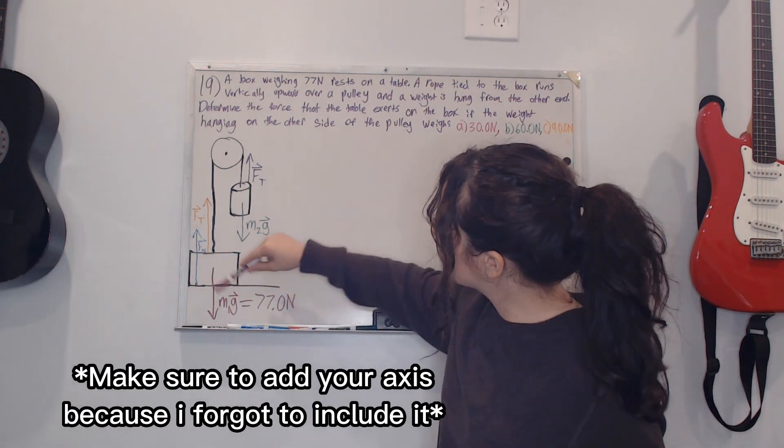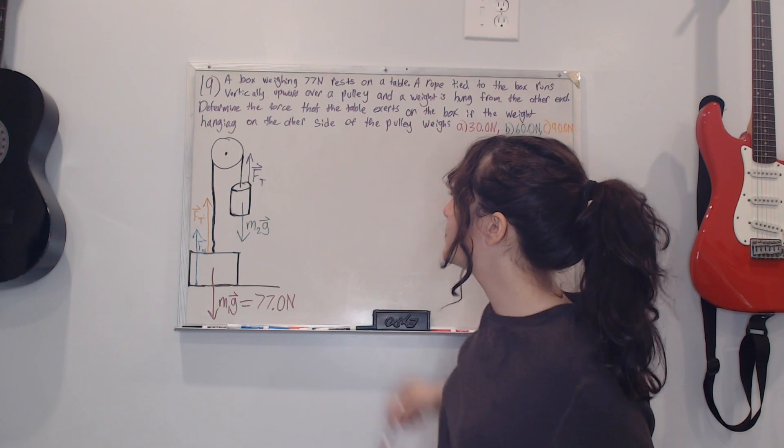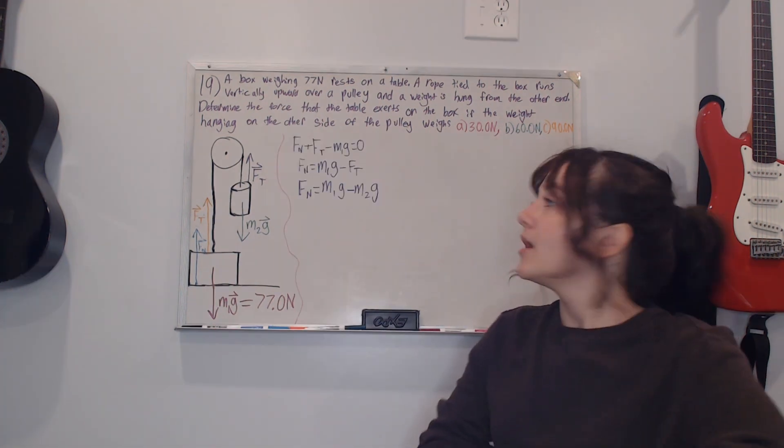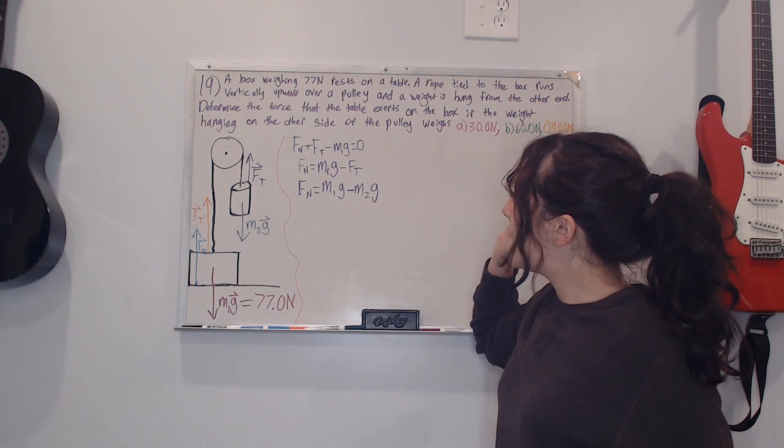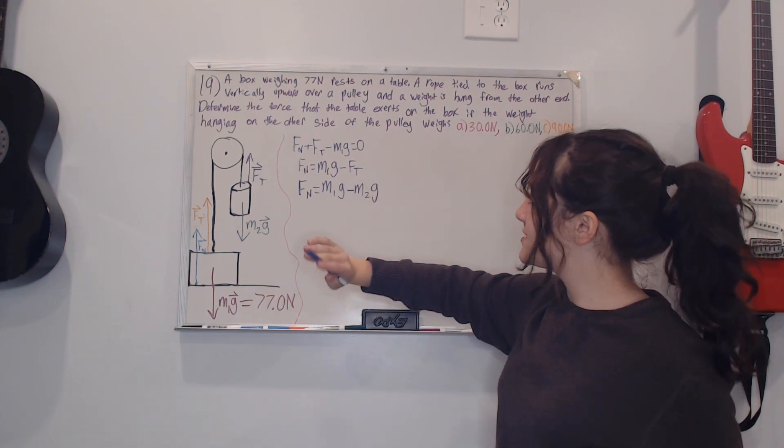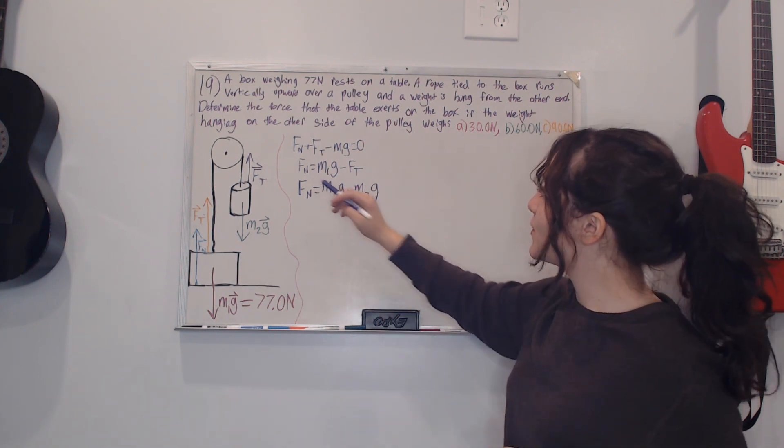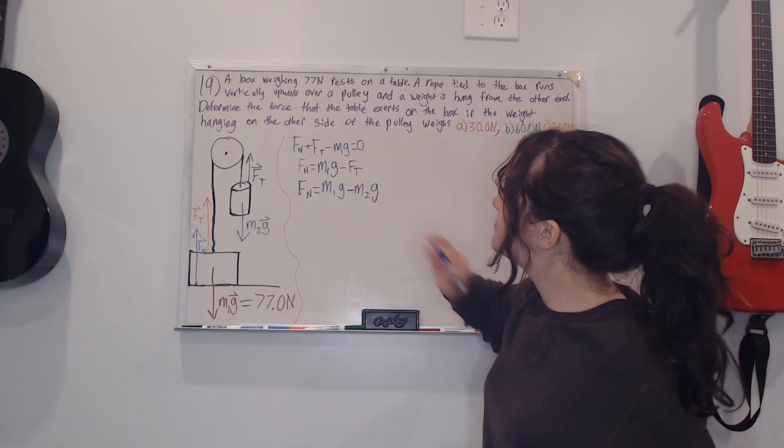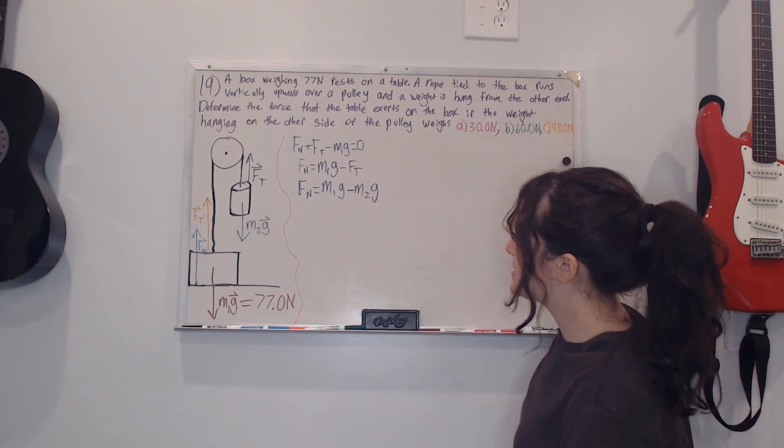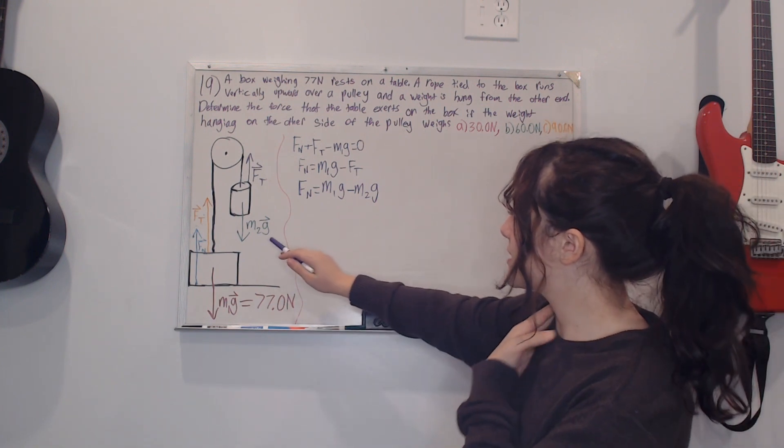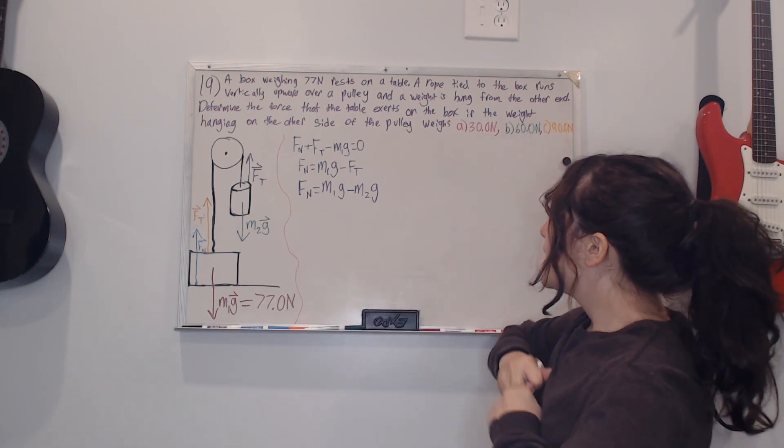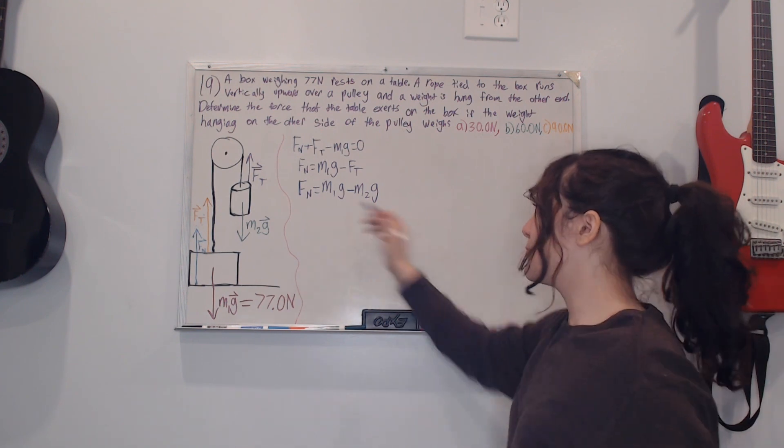I started off by writing that all of these forces equal to zero, and then after that I solved for my normal force and I got Fn equals m1g minus Ft. Ft in this case equals your second center of gravity and I ended up with this.